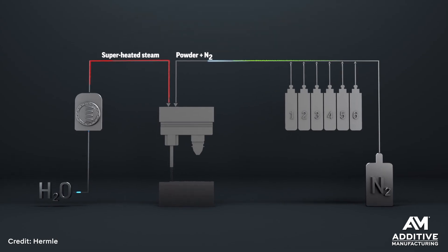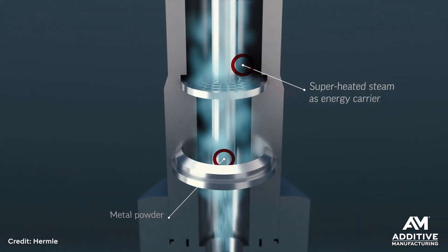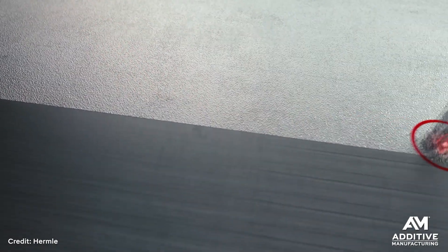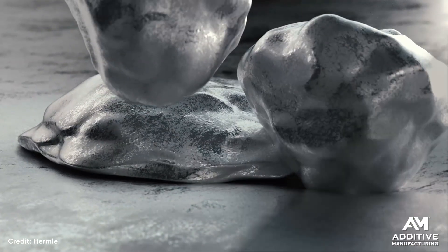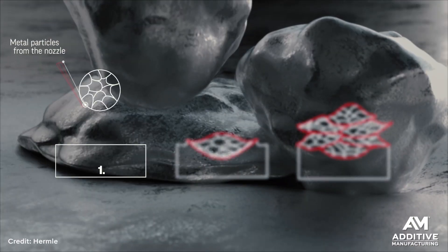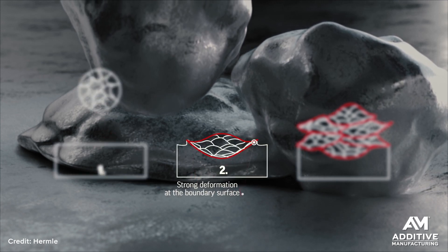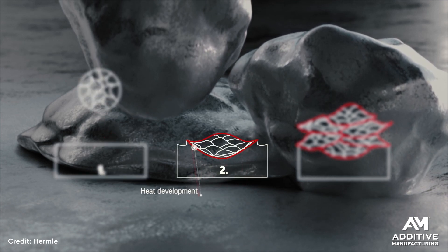MPA works by using compressed air to fire particles of material at an existing substrate or parts. The powder is accelerated to very high speeds and fired at a preheated workpiece. The particles deform and bond to the substrate as well as each other, so you end up with high density, low porosity metal that can be machined almost right away.